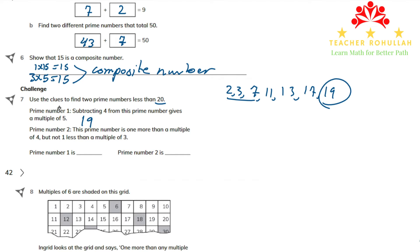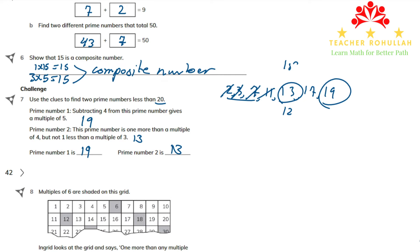For prime number 2: it is 1 more than a multiple of 4, but not 1 less than a multiple of 3. Testing 13: the multiple of 4 below 13 is 12, so 13 is 1 more than 12. The multiple of 3 after 13 is 15, and 13 is not 1 less than 15. So prime number 2 is 13.